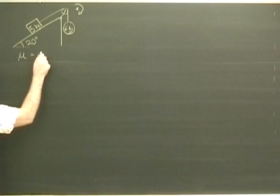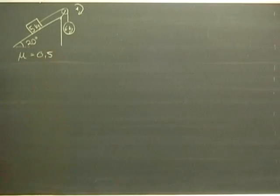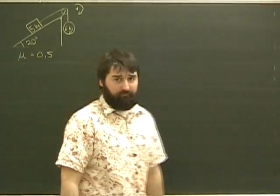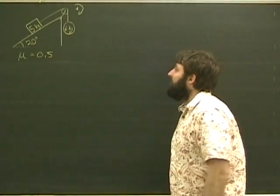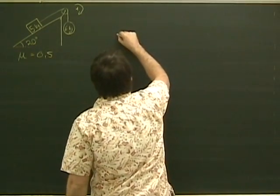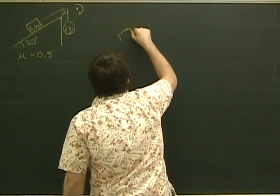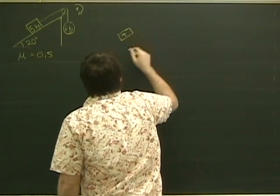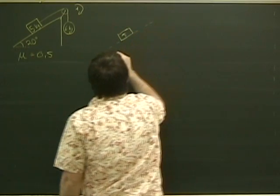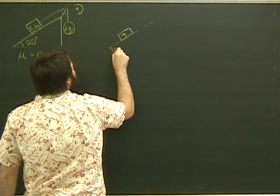For this question, mu is quite high, it's 0.5. So no problem. Let's make some free body diagrams. There's a five kilogram object. Let's make a free body diagram. It's resting on a ramp, 20 degrees.